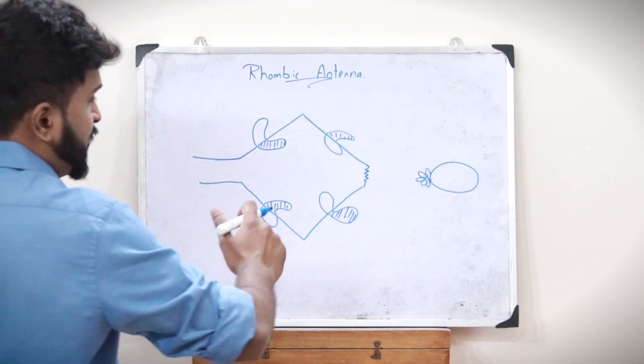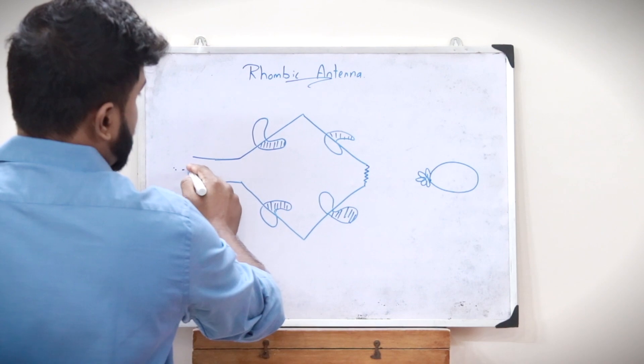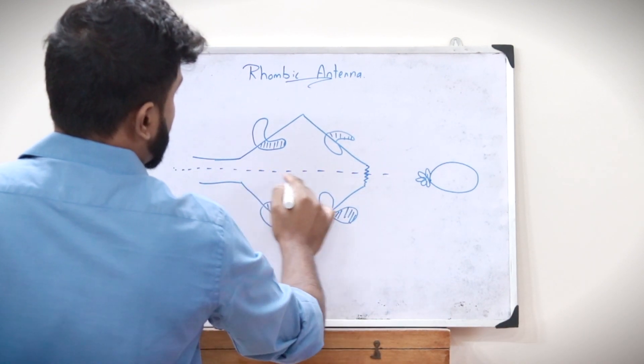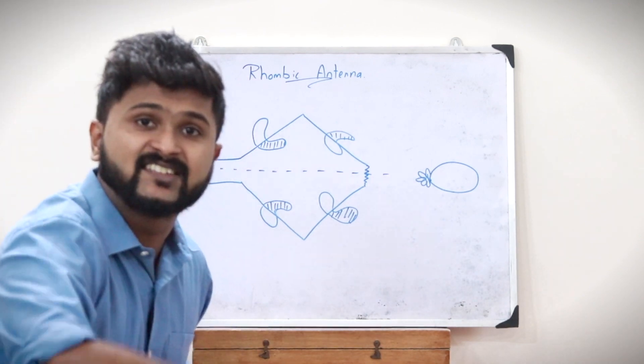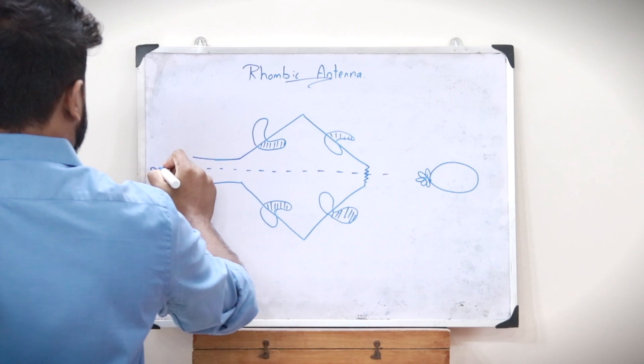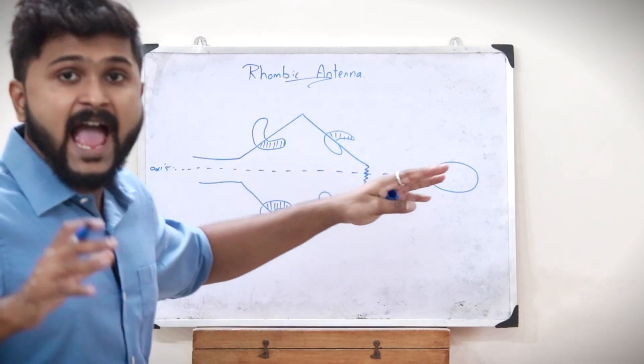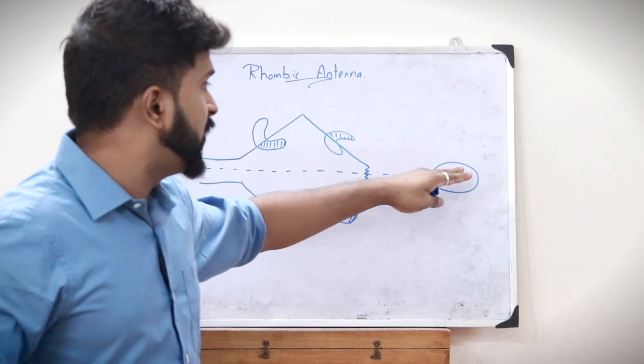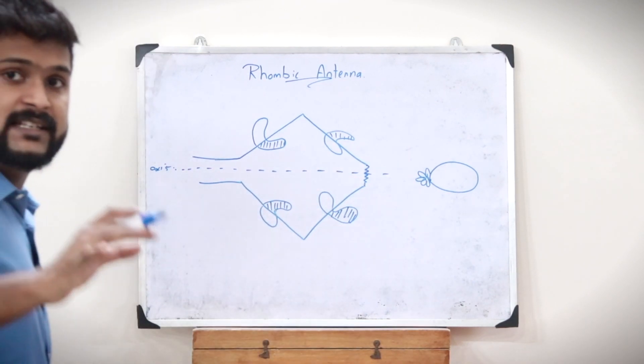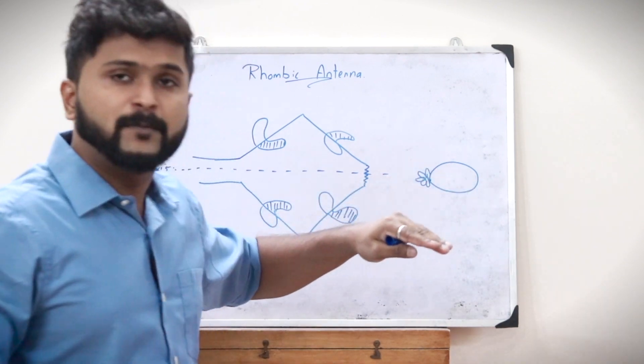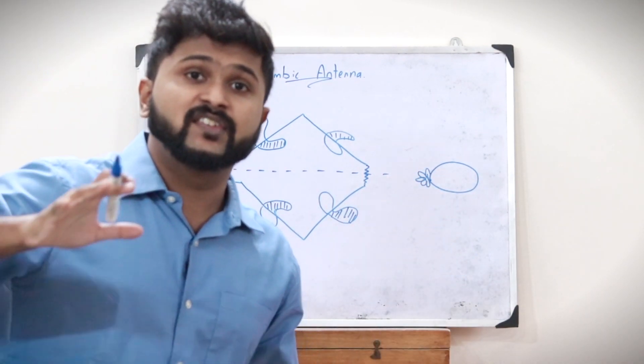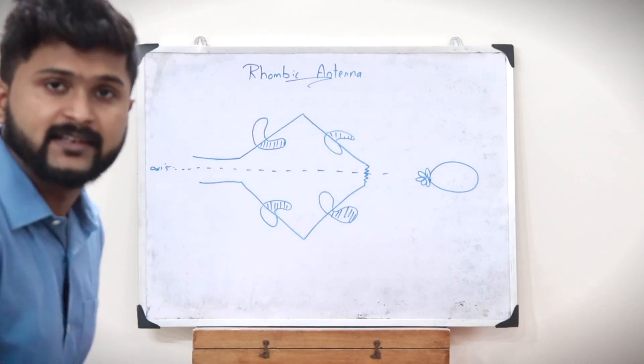The line joining the feed point and this resistance value is referred to as the axis of this rhombic antenna. The angle made by the major lobe and this axis is referred to as beta. Beta is the angle made by this major lobe with respect to the axis of this rhombic antenna.